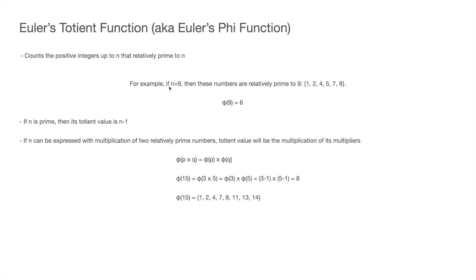Euler's totient function φ(n) counts the positive integers from 1 to n minus 1 that are relatively prime to n. For example, to find φ(9) we count the positive integers up to 9 that are relatively prime to 9. These numbers are 1, 2, 4, 5, 7, and 8 — six different numbers — so φ(9) equals 6. RSA adopts Euler's theorem because if n is a prime number, then its totient value equals n minus 1, since all positive integers less than n are relatively prime to n.